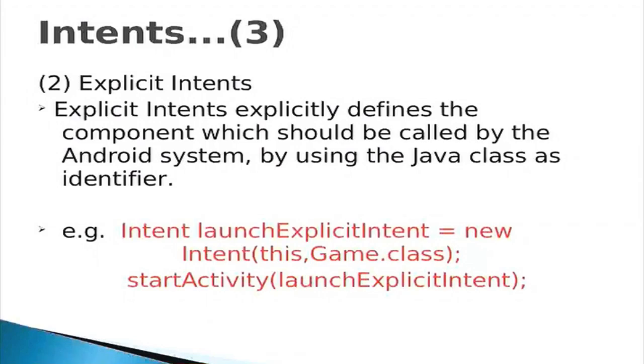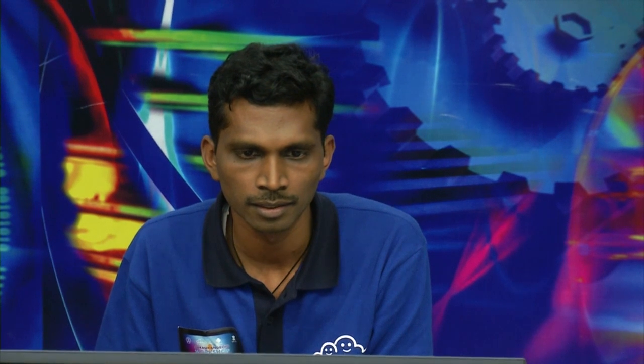Making a call is also an implicit intent. What is an explicit intent? Explicit intents specifically define the component which should be called by the Android system. Suppose we are in one application and want to call another application's class — we can do it with the help of explicit intent. In the code snippet, we are specifying the name of the class as an argument and then starting an activity. Examples of explicit intents include starting an activity or service or broadcasting that an event has occurred.